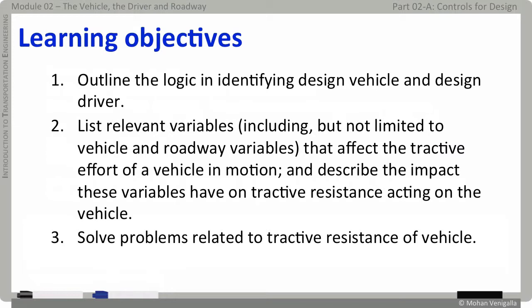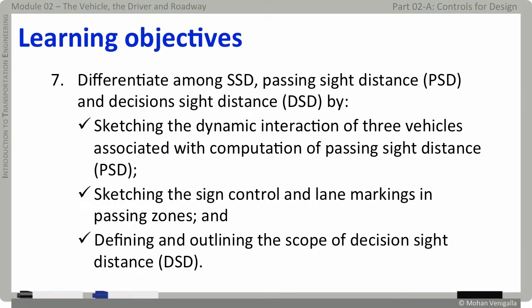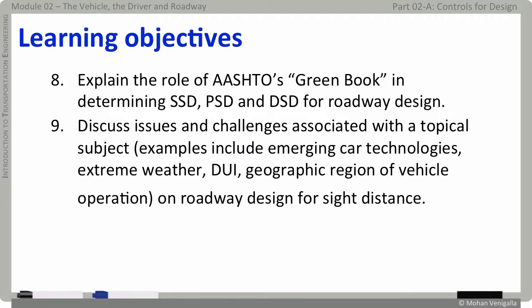In this part, we will talk about the rationale for identifying the design vehicle, look into variables that affect the vehicle's tractive effort on the road, and solve some problems on the topic. Then we study the theory behind safely stopping a vehicle, which leads to the commonly known term reaction time and how it plays into stopping sight distance. We will solve problems on reaction distance and stopping distance. In addition to stopping sight distance, we will also learn about passing sight distance and decision sight distance, and look into the role played by the AASHTO Greenbook. Finally, we will discuss the effects of some current topics on control variables for highway design.